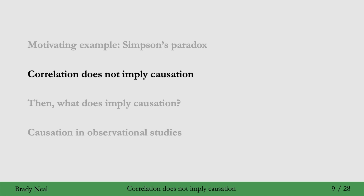That concludes the motivating example of Simpson's Paradox. A quick recap: we prefer treatment B when condition is a cause of treatment in the causal graph, and we prefer treatment A when treatment is a cause of condition. The decision of which treatment to give your whole country — a decision affecting many lives — hinges crucially on the causal structure of the problem.